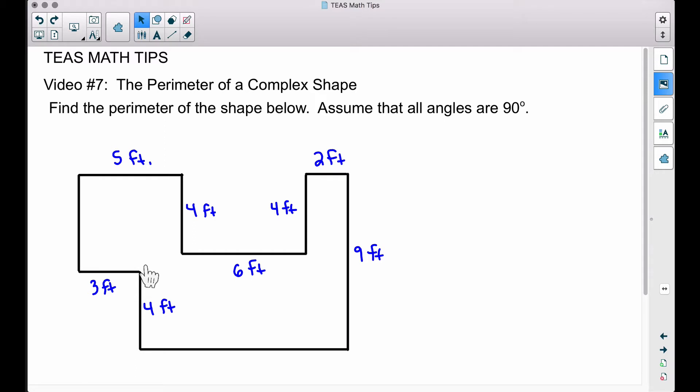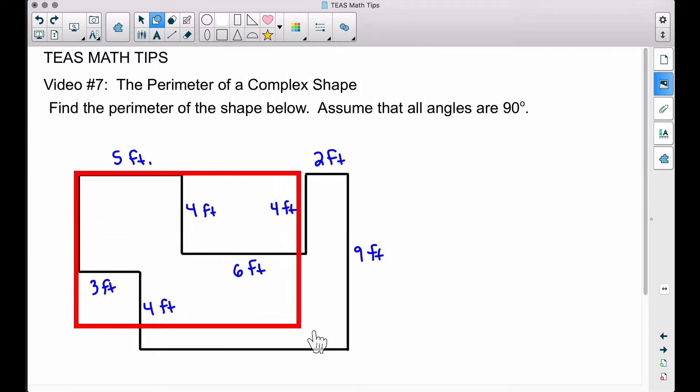To find the perimeter of this shape, we need to add up all these sides. But we don't have a measurement for this side here and we don't have a measurement for this side down here. Let's work on this bottom one first.